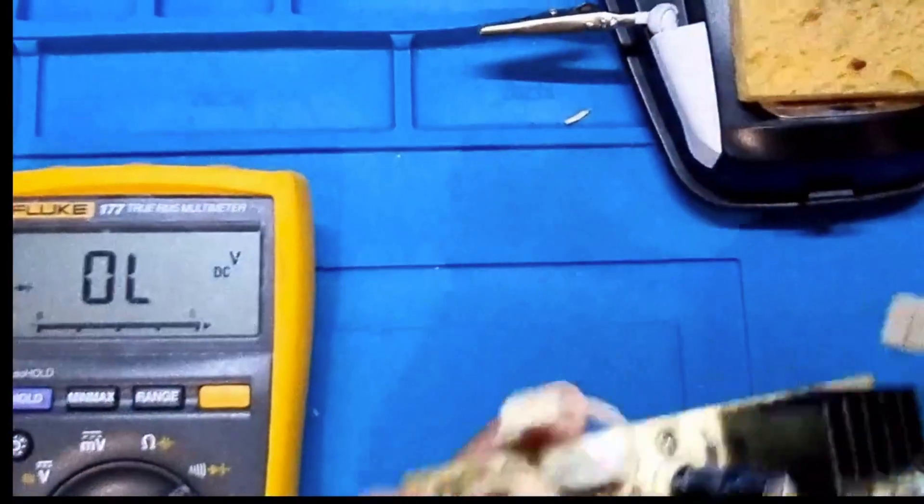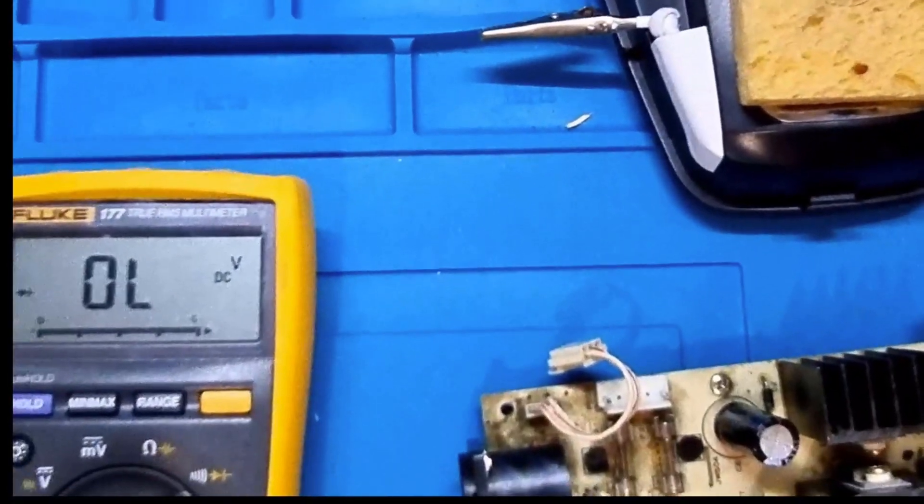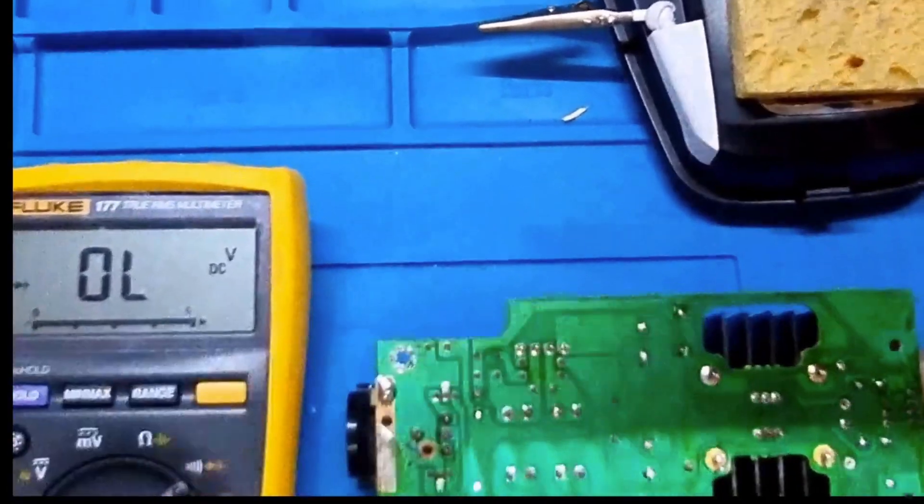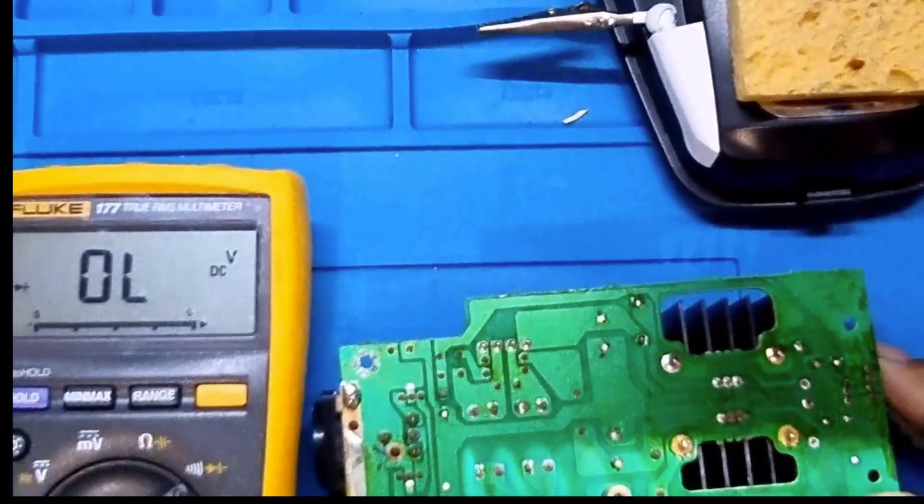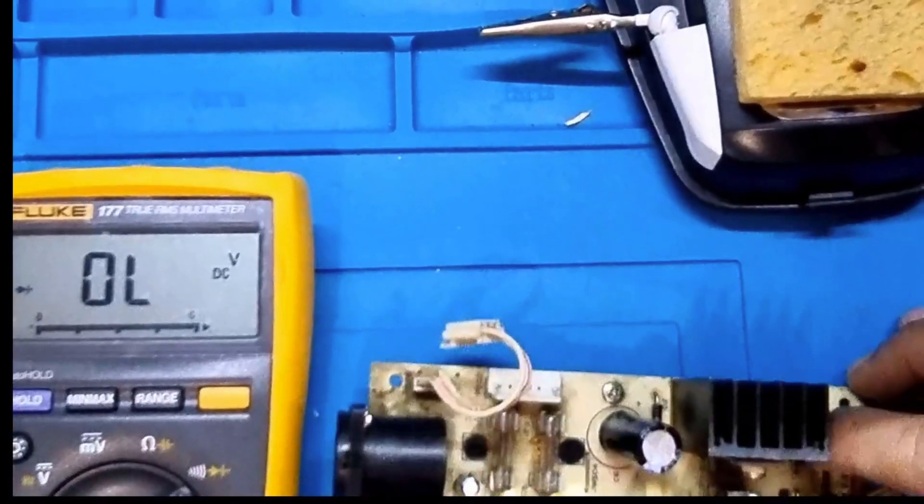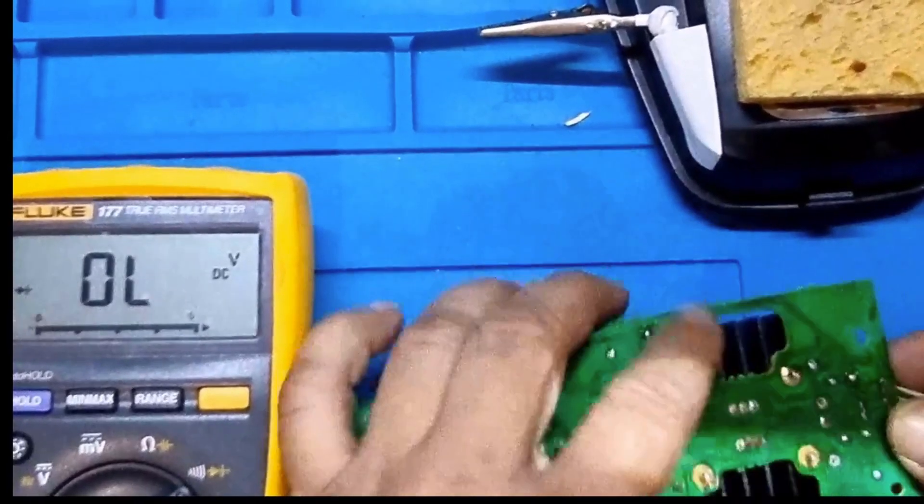I'm unsure what that C13 capacitor value is because I'd like to swap that out as well. I'm going to show some meter readings on what I'm getting now. What I've done is I've gone ahead and desoldered the legs on each diode so it's not really making good connection with the board.